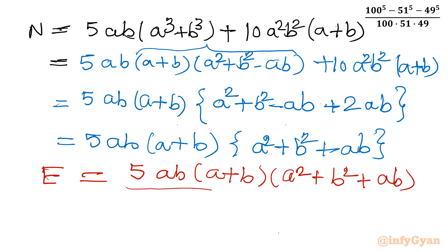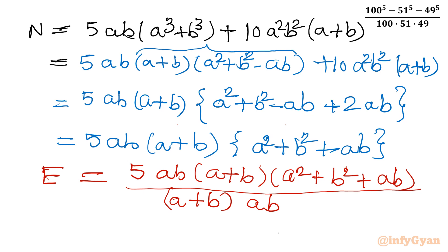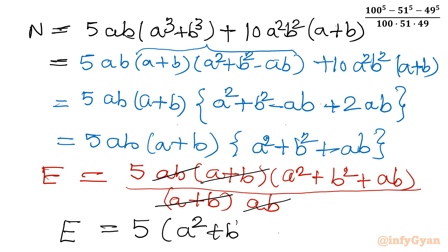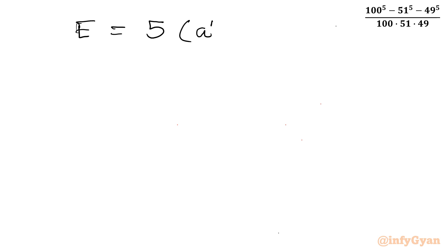Let us write our expression E, since we have calculated the simplified form of the numerator. In the numerator place I can write 5AB times A plus B times A square plus B square plus AB. The denominator was A plus B times A times B. Now I can cancel A plus B and AB, so expression E equals 5 times A square plus B square plus AB.